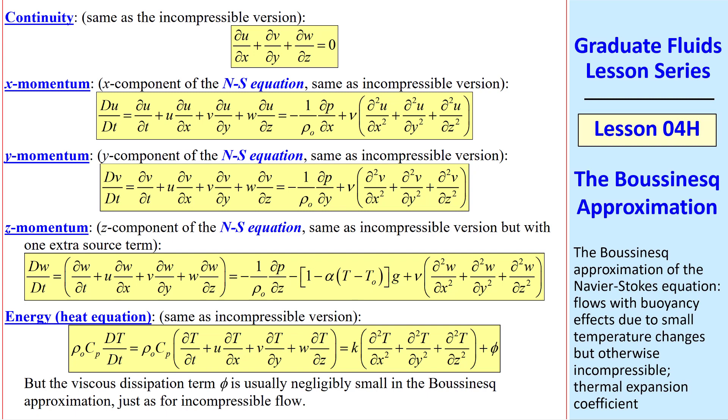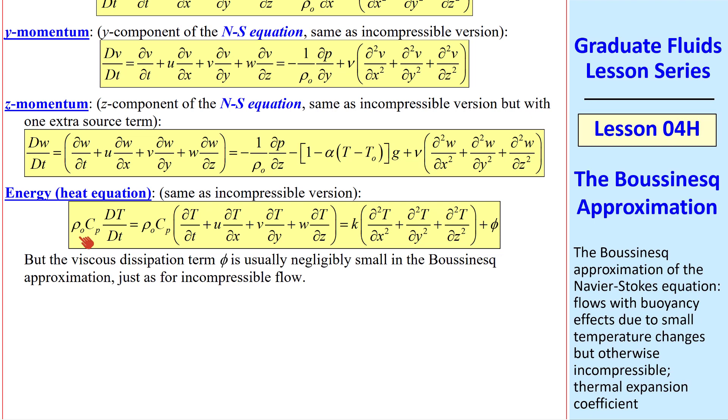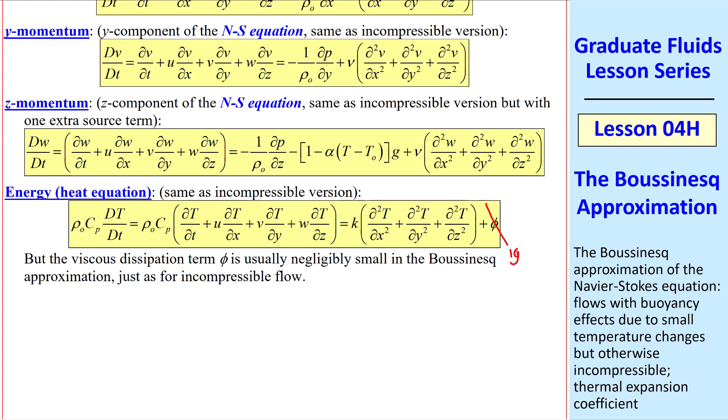Recall that for incompressible flow, temperature is not one of our variables. But here, we do have to include temperature as one of the fundamental variables to be solved for. So we must also look at the heat equation, or the energy equation. Again, we assume constants such as rho naught and Cp. These are evaluated at our reference temperature, T naught. But we use the otherwise incompressible version of the heat equation. But it turns out that the viscous dissipation term phi is negligibly small in the Boussinesq approximation, the same approximation we made for incompressible flow previously. So we'll ignore this term, since phi is the same order of magnitude as other neglected terms when we make our approximations.